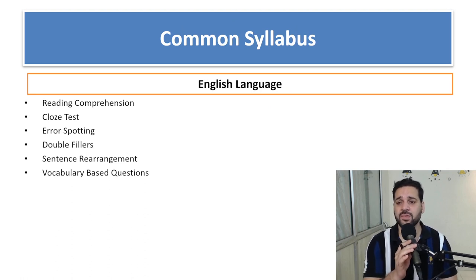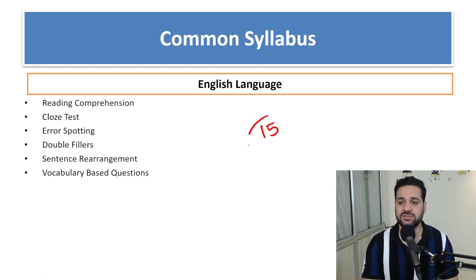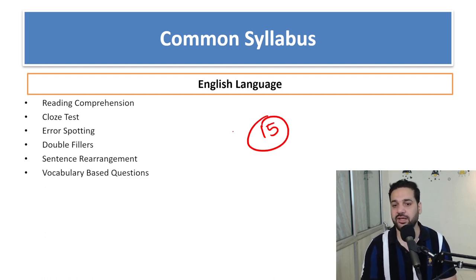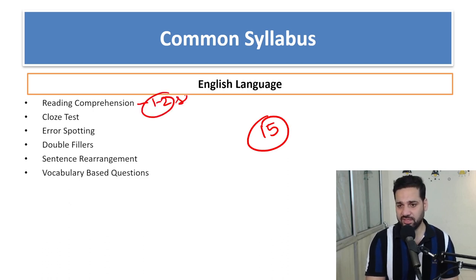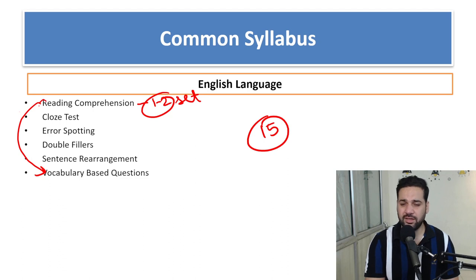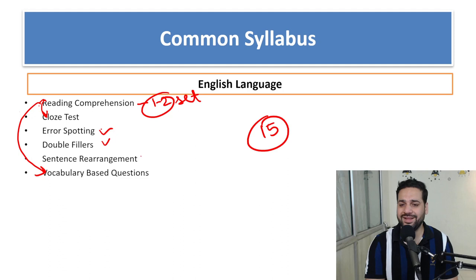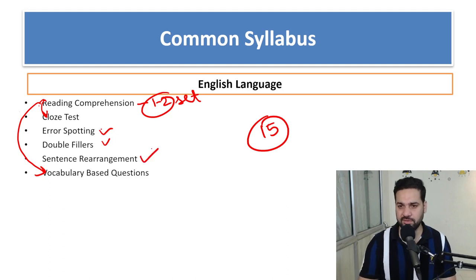For the English syllabus, 15 questions will come. There will be one or two Reading Comprehension sets, and vocabulary-based questions will come from within those sets. Additionally, there will be error spotting, a cloze test, double fillers, and sentence rearrangement — all within just 15 questions.